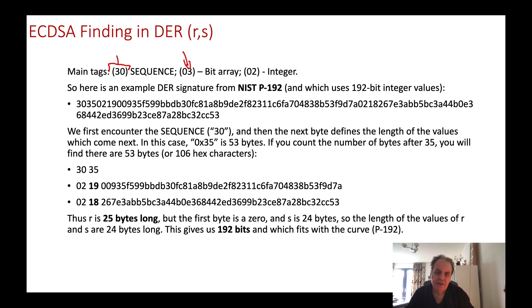A hexadecimal 30 identifies a sequence. A 03 identifies a bit array, and 02 identifies an integer. In this case, the R and S values are represented as 02, or as integers. Here's a signature we saw earlier. The first thing we encounter is the 30, and the next number is the number of bytes that follow. There should be 35 bytes after this to identify the values coming next.